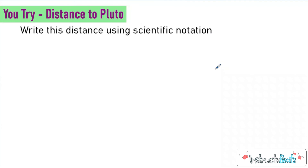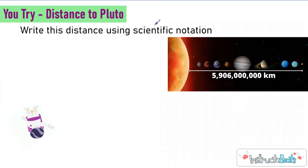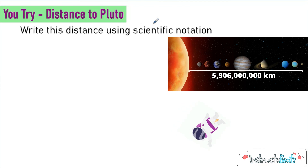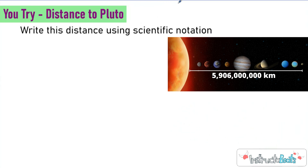Let's go to another U-tribe problem. What you're going to do is write the distance from the sun to Pluto using scientific notation. Lucky for you, you don't have to have it memorized — I have a little graphic right here. I rounded this, so this is a rough distance: 5,906,000,000 kilometers between the sun and Pluto. Go ahead and push pause, try to write this number in scientific notation, and then push play to check your work.